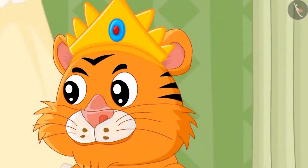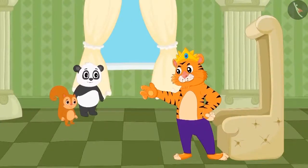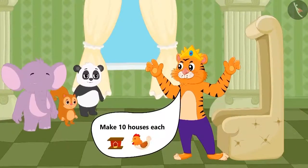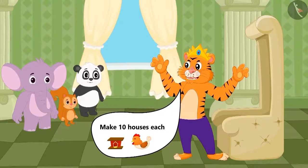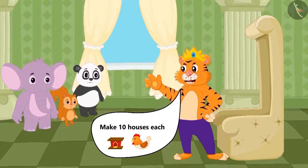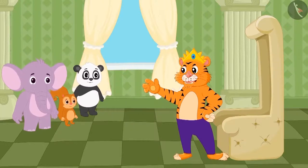One day, the king of the jungle gave ten hens each to Golu, Chanda and Appu and asked them to build a home for them. But he kept a condition.